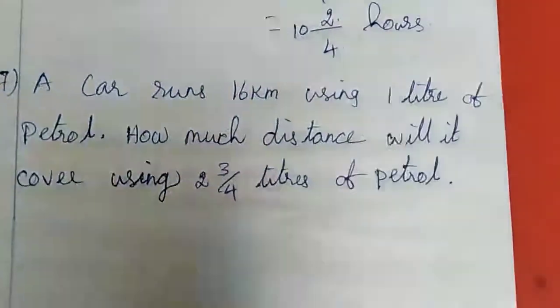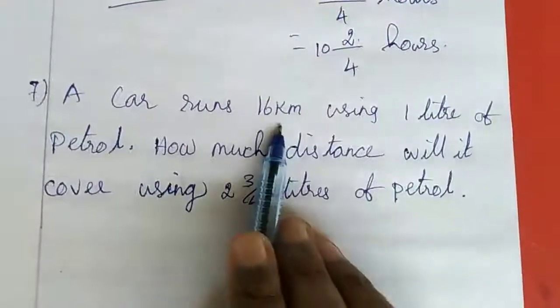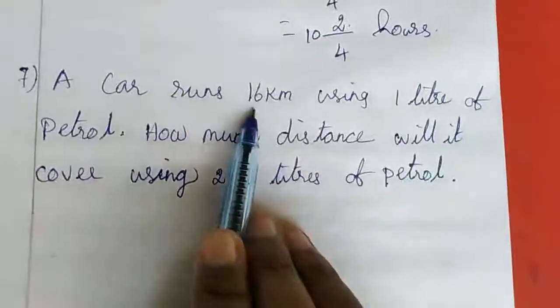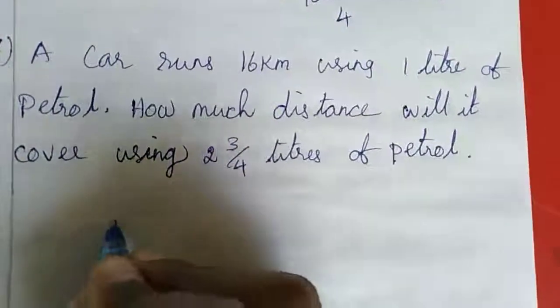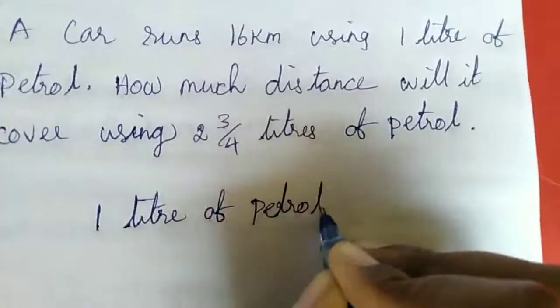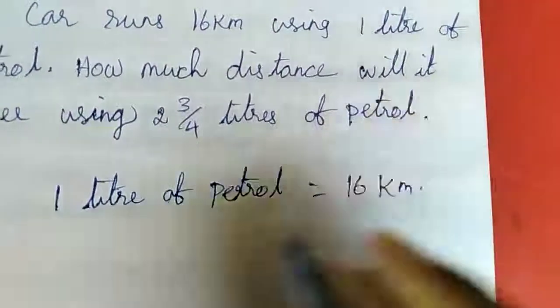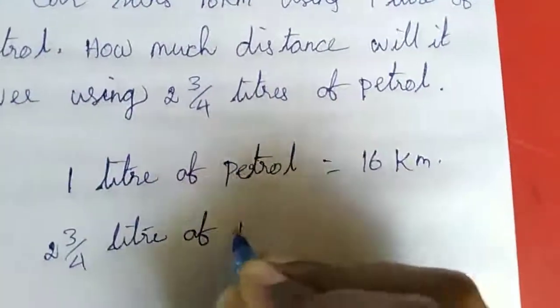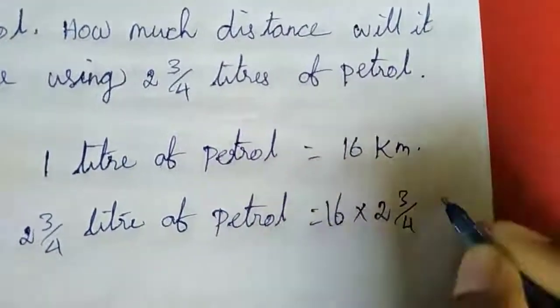Now, seventh question. A car runs 16 kilometers using one liter of petrol. How much distance will it cover using 2 3/4 liters of petrol? So one liter of petrol covers 16 kilometers. Therefore, 2 3/4 liters of petrol covers 16 times 2 3/4 kilometers.